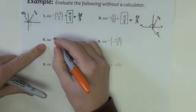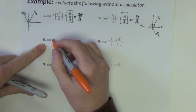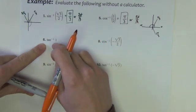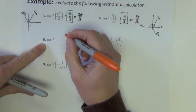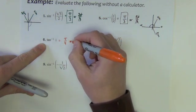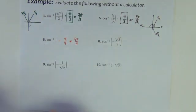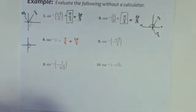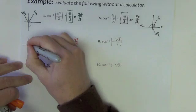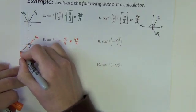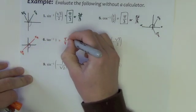Next one: tan inverse of 1. Where on the circle does tangent have a value of 1? Tangent is y over x, so where do all the coordinate points — y's over x's — reduce down to 1? That happens in two places: pi over 4 or 5 pi over 4. Inverse tangent is like inverse sine — we only want values on the right side of the graph. Pi over 4 is in the first quadrant; 5 pi over 4 is down here, so we throw out the 5 pi over 4. The answer is pi over 4.